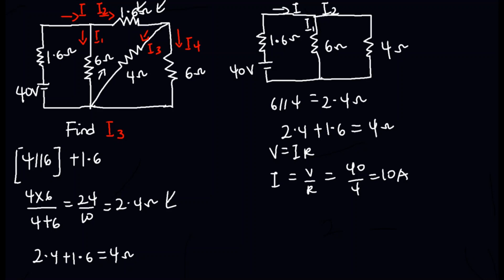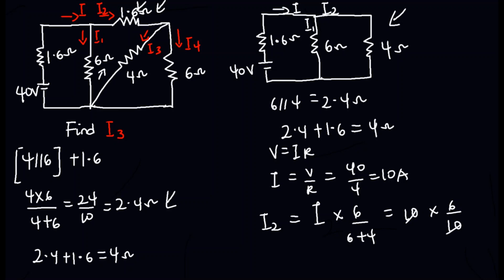To find i3 we have to find i2 first. We use the current division rule: i2 equals the total current i times 6 ohms divided by 6 plus 4. That is 10 times 6 over 10, the 10s cancel, and we get i2 equal to 6 amperes.